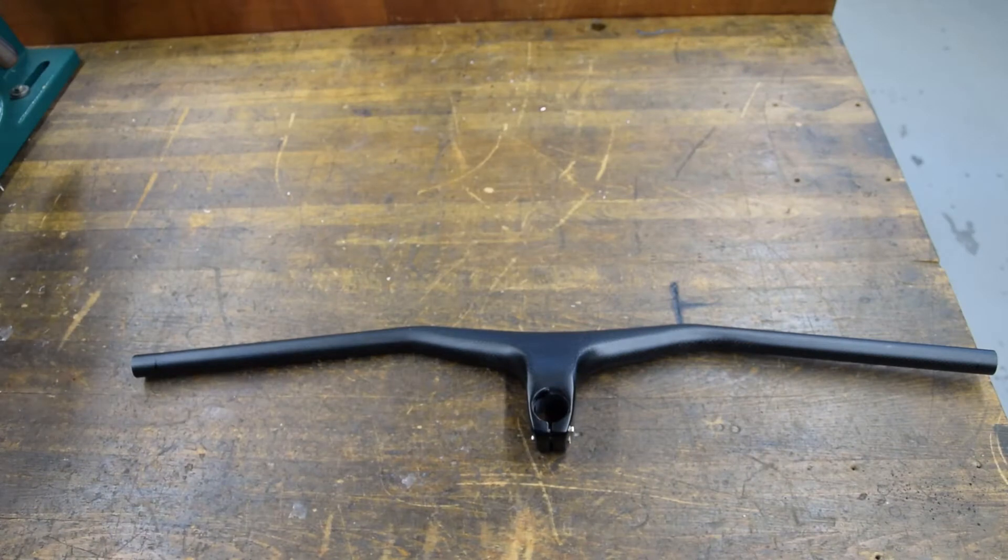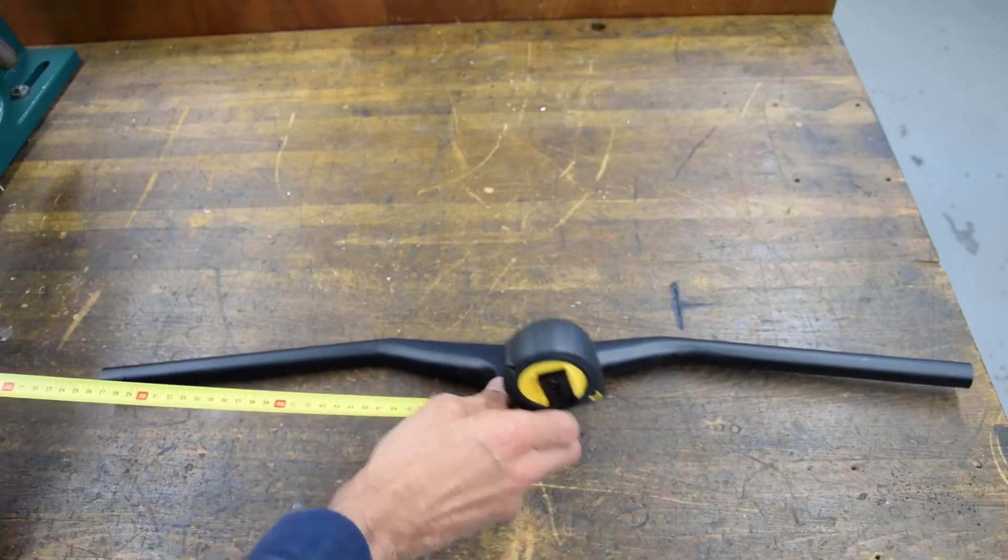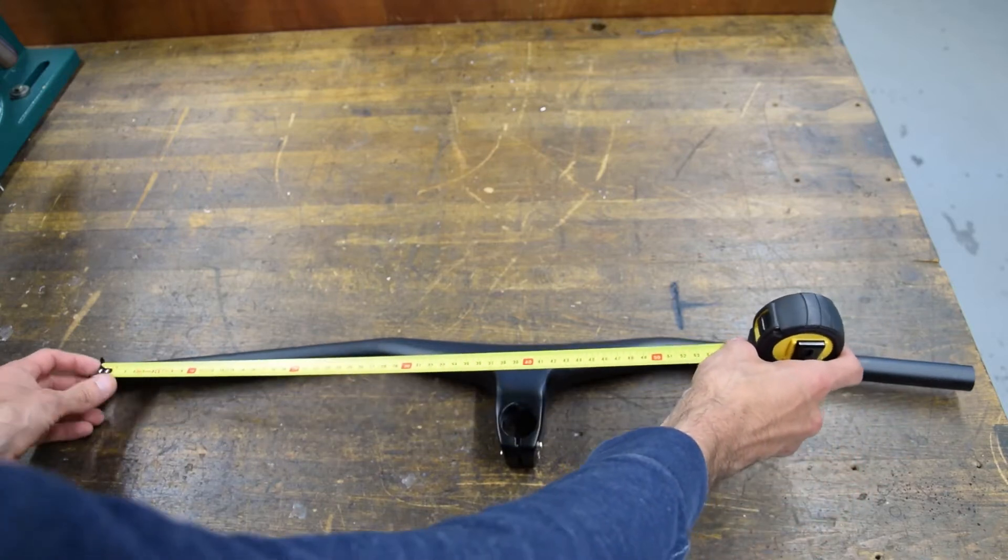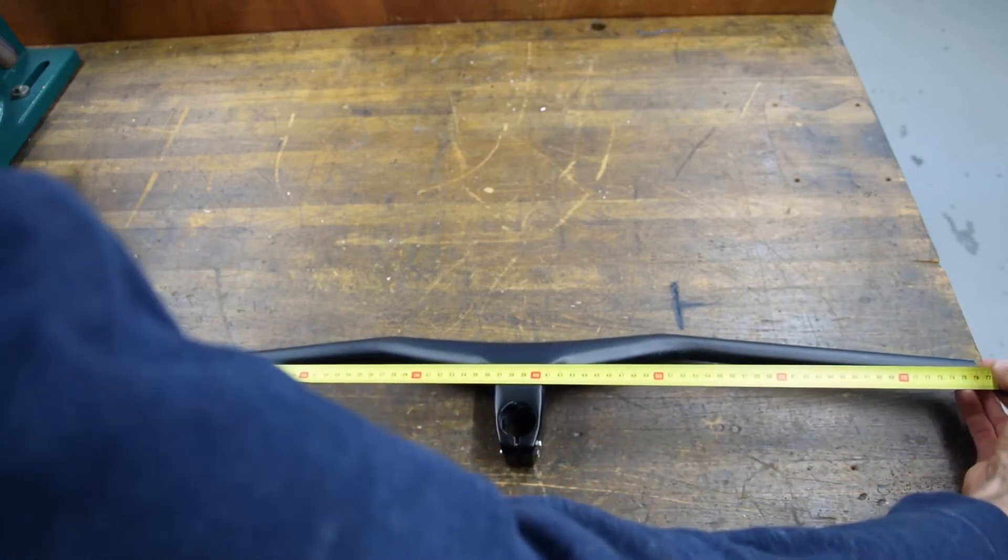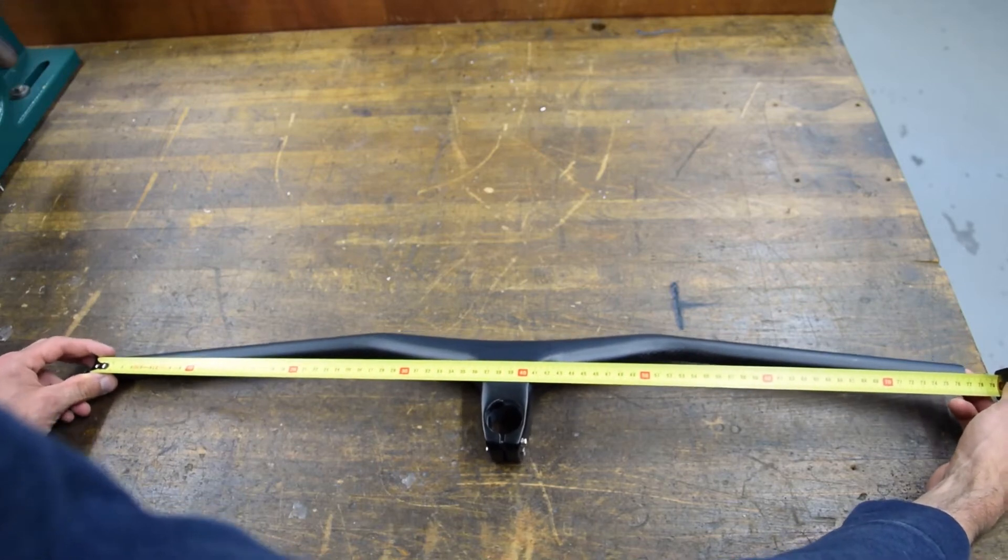We measure now the total length of the handlebar. As I mentioned, I ordered the handlebar to be 780 millimeters. So let's measure it side to side and I hope you can see it but it's not 780 millimeters, it's rather 766 millimeters, so there's a discrepancy of like 14 millimeters.